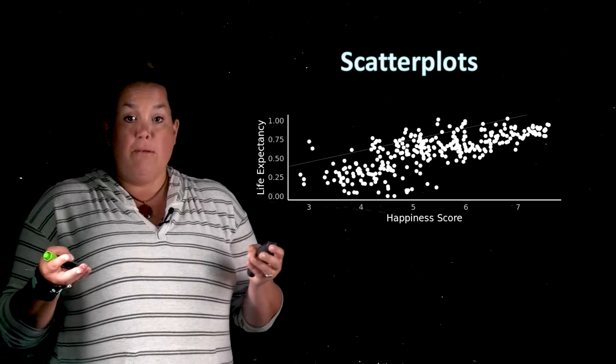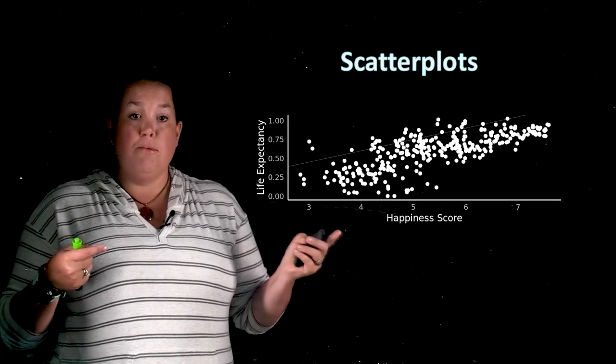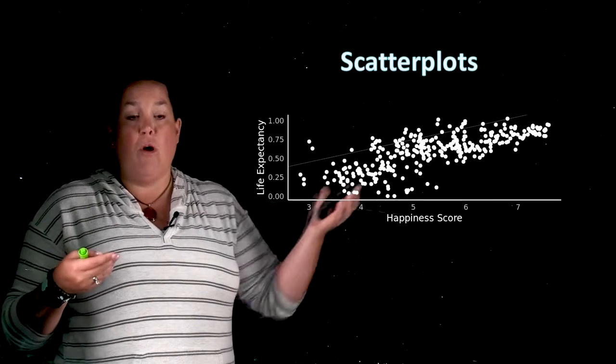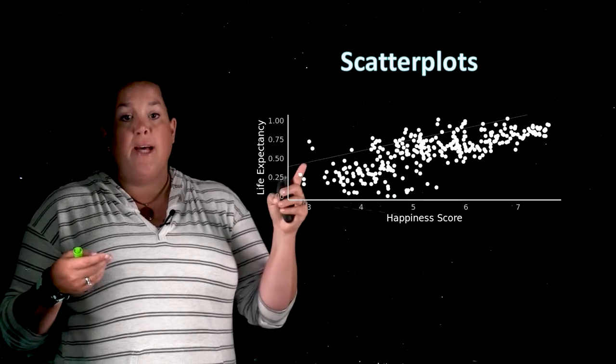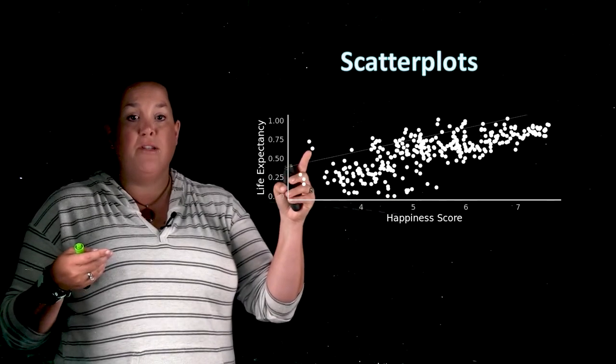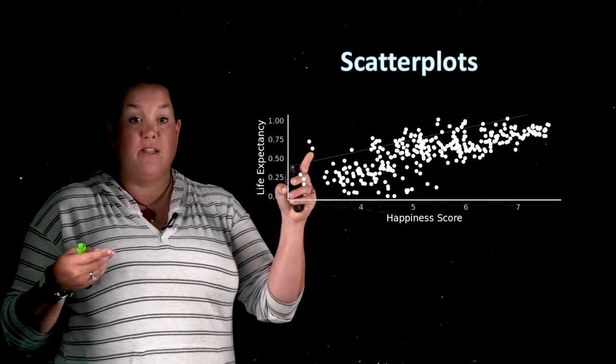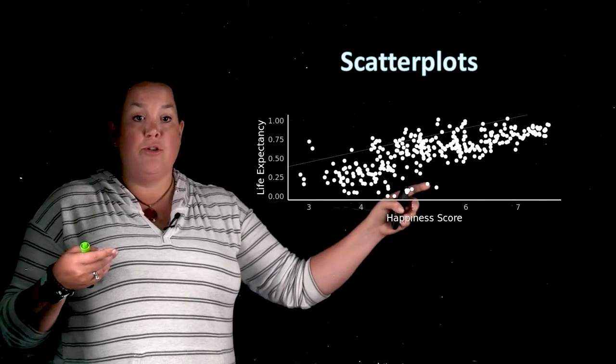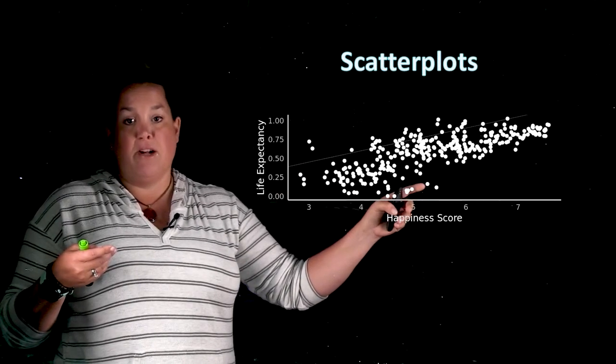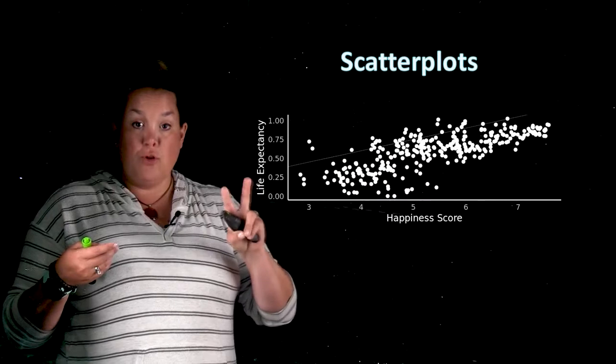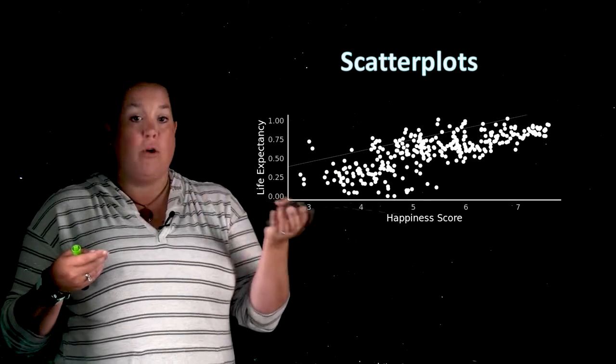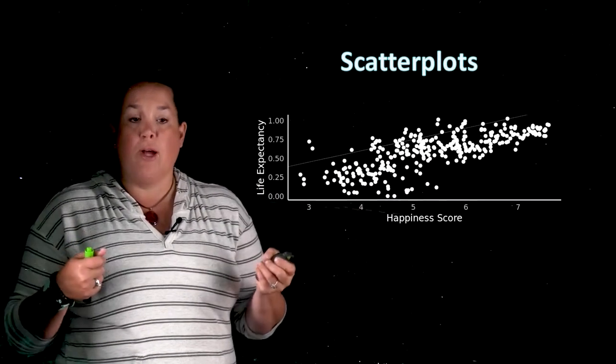Now this is a scatterplot and each of these individual points are unique measurements - these are actually countries. And so this is a country's happiness score and their life expectancy score. So these are two quantitative measurements on one individual or country or whatever it is that you're looking at.